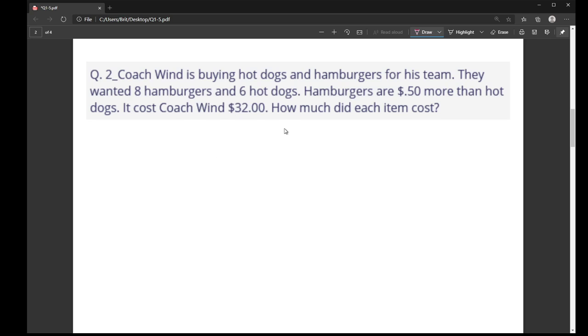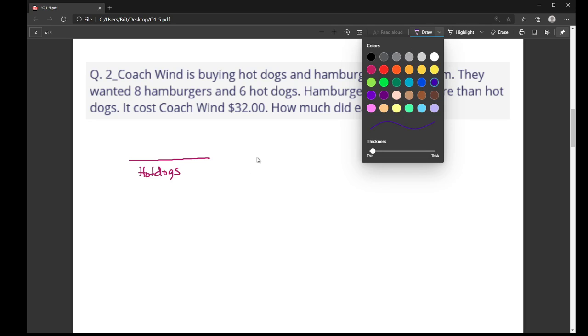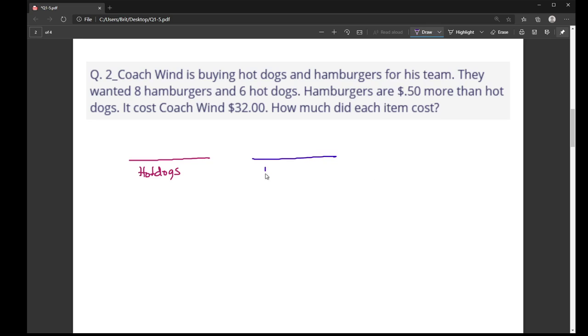So in order to do this problem, I like to set up kind of a base equation. This here is my hot dogs, and this here is my hamburgers. So Coach Wind, he's buying some hot dogs and hamburgers, so we're adding those costs together. And this problem says that it costs him $32.